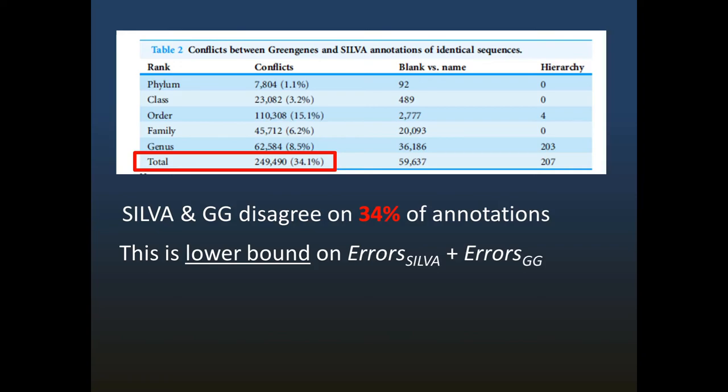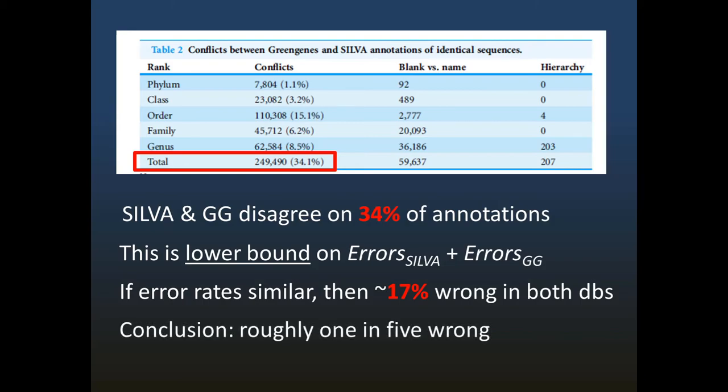This is a lower bound on the total number of errors in SILVA and Greengenes combined, because there are surely additional errors where the databases agree, but both are wrong. If we assume that the databases have similar error rates, then both of them have an error rate of at least 17%. If one is better than the other, then the error rate of the worst database must be even higher than 17%. The key message to remember here is that SILVA and Greengenes do not provide authoritative references for taxonomy. On the contrary, probably something like 1 in 5 of their taxonomy annotations is wrong.